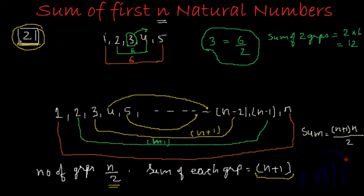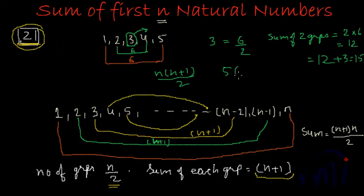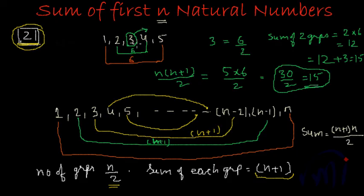So we have two full groups and one half group. To find the total sum: 12 plus 3 equals 15. Using the formula with n equals 5: it is 5 multiplied by 5 plus 1, which is 6, divided by 2 — that is 30 by 2, which equals 15. When we have an odd number of terms we get the same result. The reason is that the term left behind is exactly the middle term of the series, and its value is exactly half the sum of each group, so it is automatically covered by the n by 2 in the formula.